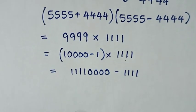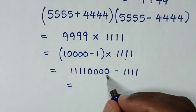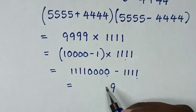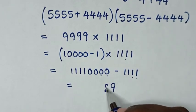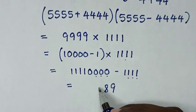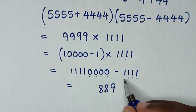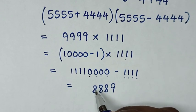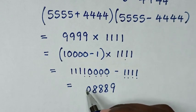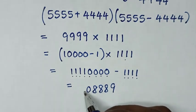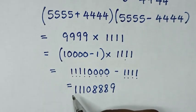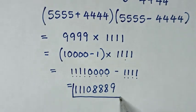Then it will equal: 10 minus 1 is 9, 9 minus 1 is 8, 9 minus 1 is 8. If we borrow 1, it will be 9 minus 1 is 8, and then here it will be 10, which gives us 0, then 1111. So the answer is 11088889.